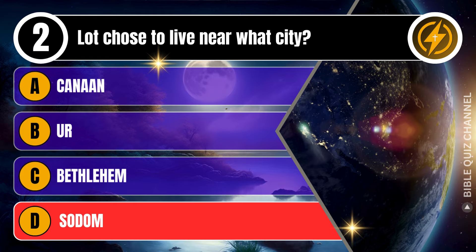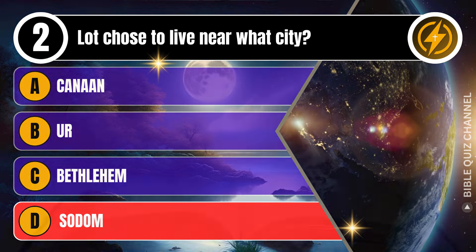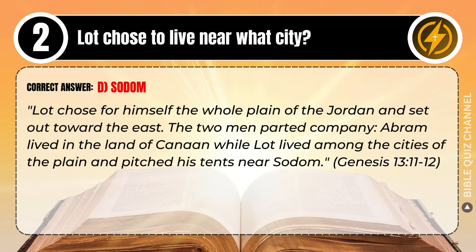Correct answer: D. Sodom. Explaining the Bible — Lot chose for himself the whole plain of the Jordan and set out toward the east. The two men parted company. Abram lived in the land of Canaan, while Lot lived among the cities of the plain and pitched his tents near Sodom. Genesis, chapter 13, verse 11 to 12.